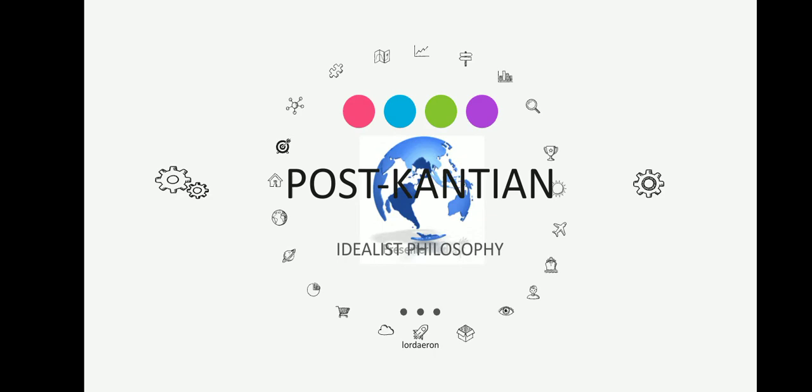In our past discussion we discussed Emmanuel Kant, who is both empiricist and rationalist. He is in the middle ground. Emmanuel Kant is a big influence of the two philosophers that we will discuss later, which is why this is called post-Kantian idealist philosophy.